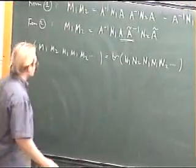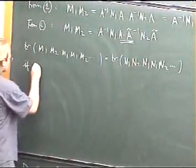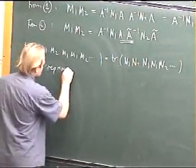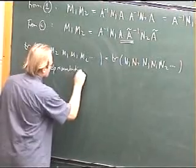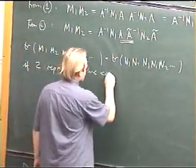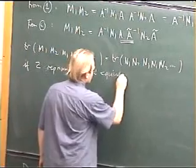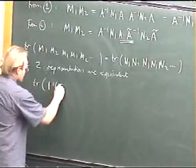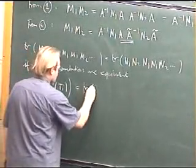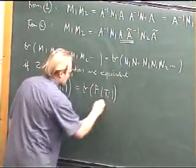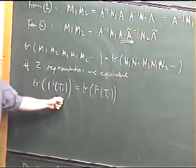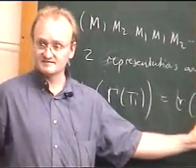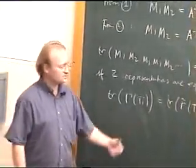So if two groups are equivalent, if two reps, if two representations are equivalent, then we know that the trace of the matrix representing a certain group element will be equal to the trace of the matrix representing the group element in the other representation. So if this is true,